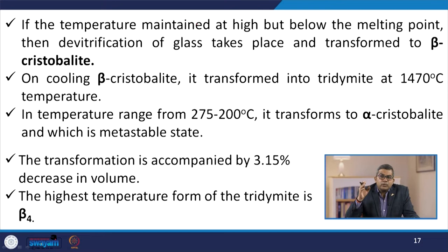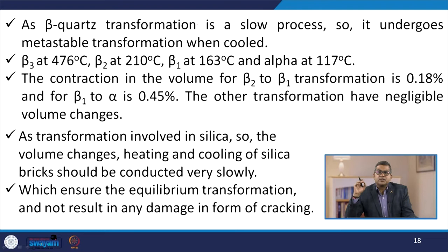Beta quartz and tridimite can directly transform to glass if the heating rate is high — beta quartz transforms to glass at 1450°C, and tridimite to glass at 1680°C. Liquid silica can transform into glass on fast cooling. If temperature is maintained high but below the melting point, de-vitrification of the glass takes place and transforms to beta cristobalite.